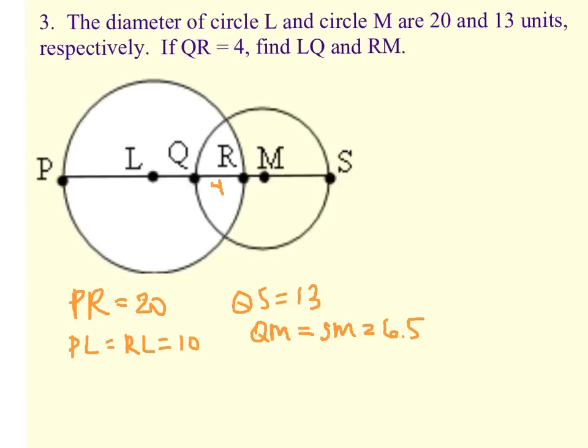So, first thing I'm going to start with is, right here, QM is a radius of this circle. And right down here, we just identified that QM is 6.5. Well, if this is 4, and the whole thing is 6.5, then that means RM would have to equal 6.5 minus 4, which is not 1.5, if you do the math. 6.5 minus 4 would be 2.5.